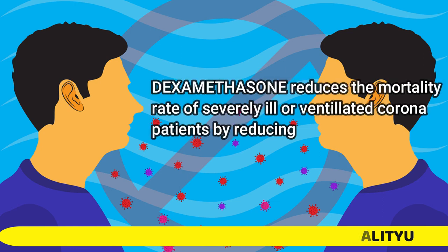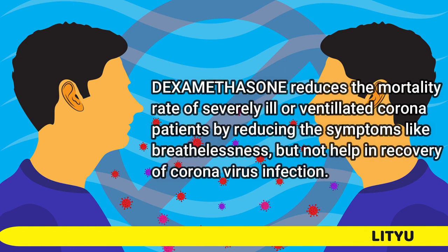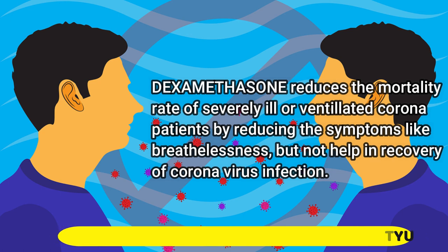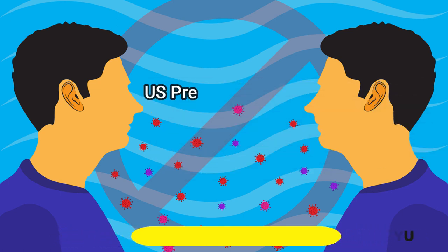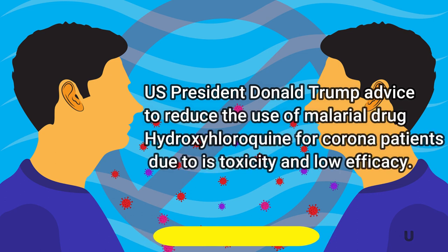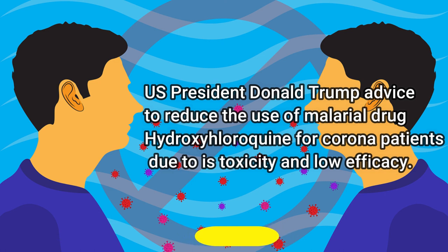Dexamethasone reduces the mortality rate of severely ill or ventilated Corona patients by reducing symptoms like breathlessness, but does not help in recovery of Coronavirus infection. US President Donald Trump advised to reduce the use of the malarial drug Hydroxychloroquine for Corona patients, due to its toxicity and low efficacy.